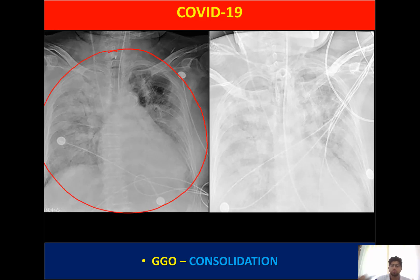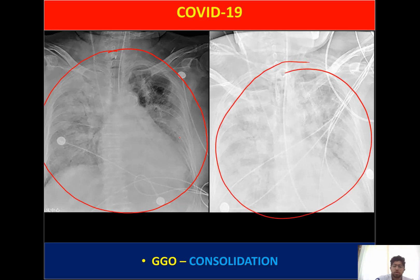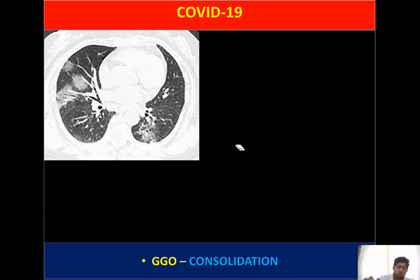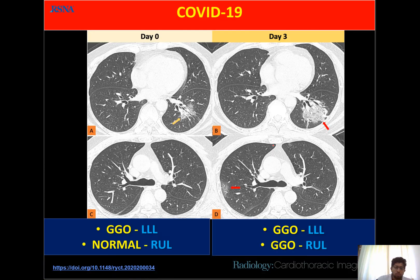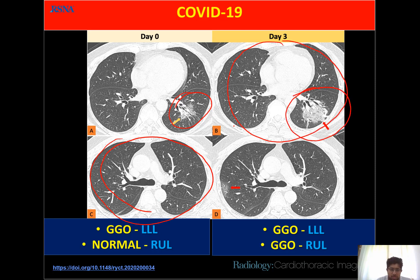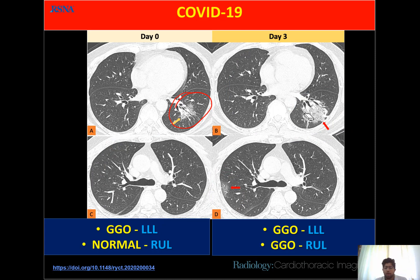This image shows disease progression: diffuse ground glass opacity progressing to diffuse consolidation; the patient could not survive. Another CT image shows bilateral ground glass opacities progressing to consolidation — the same patient again could not survive. On day one, ground glass opacity is seen in the left lower lobe; subsequently it becomes denser, more towards consolidation, with new ground glass opacity forming on the contralateral chest — the disease is progressing and patient may have diffuse involvement.